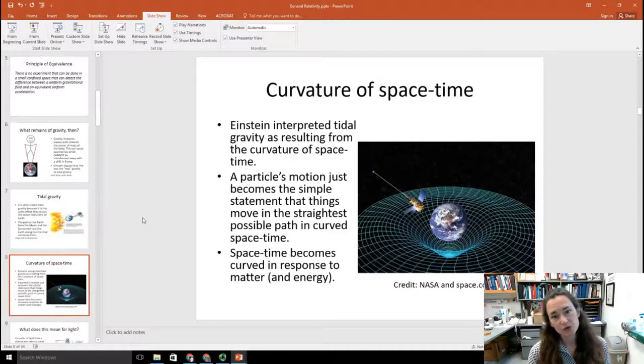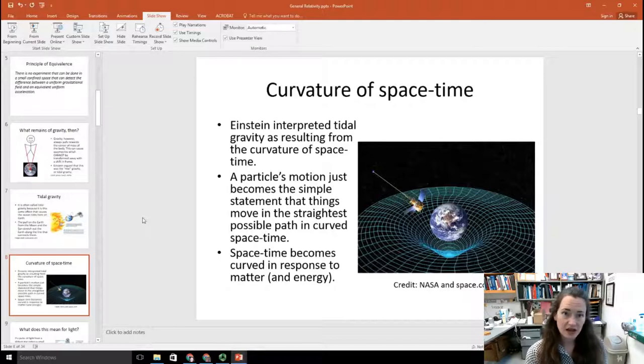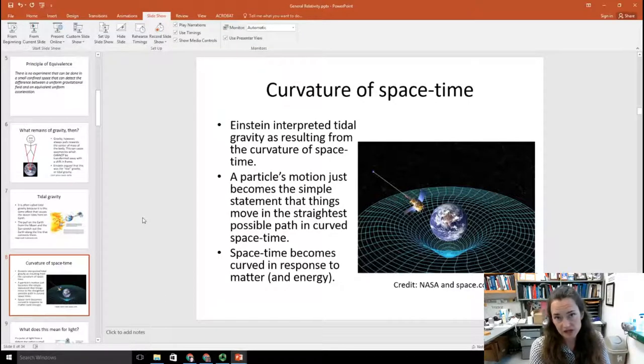So Einstein interpreted tidal gravity as resulting from a curvature of spacetime. Now, this is kind of an astounding concept to wrap your head around. Because, of course, between us and the sun it looks like a straight line to us. Everything looks normal. But, in fact, Einstein says that the spacetime in between us and the sun is curved, and it gets more and more curved as it gets closer to the source of the gravity, the sun.